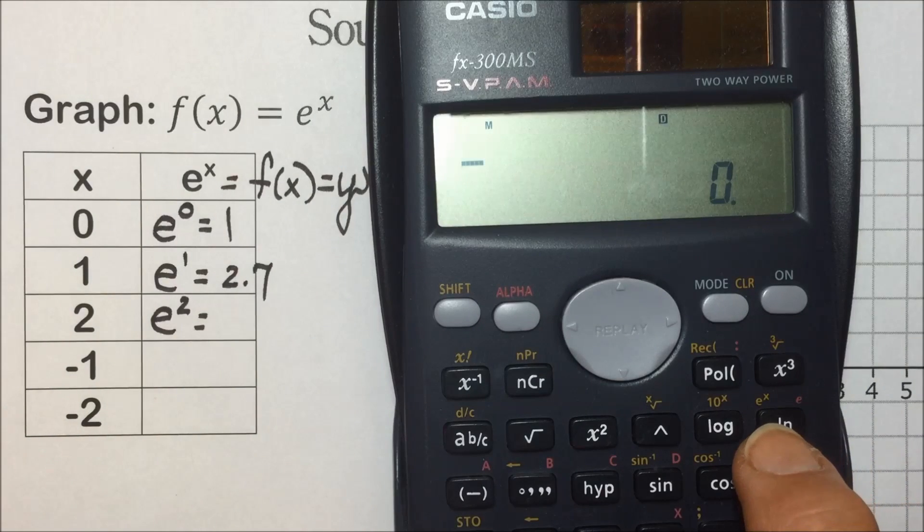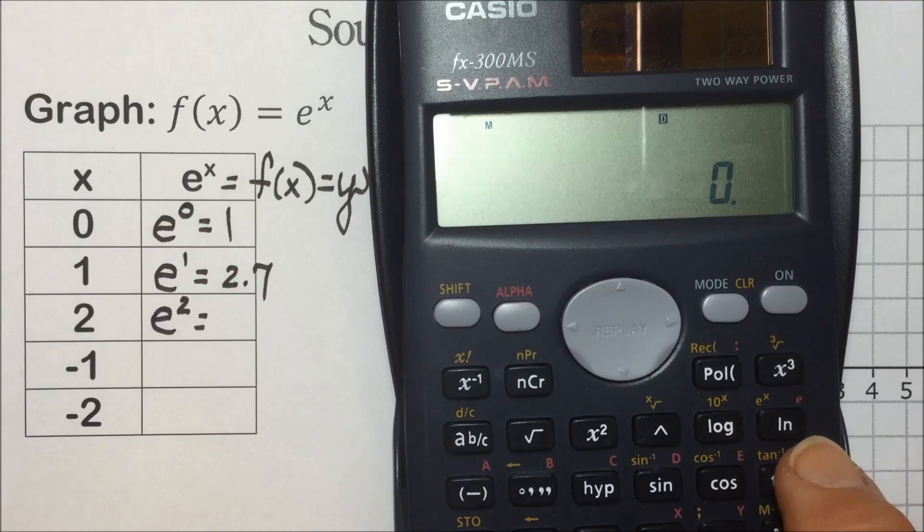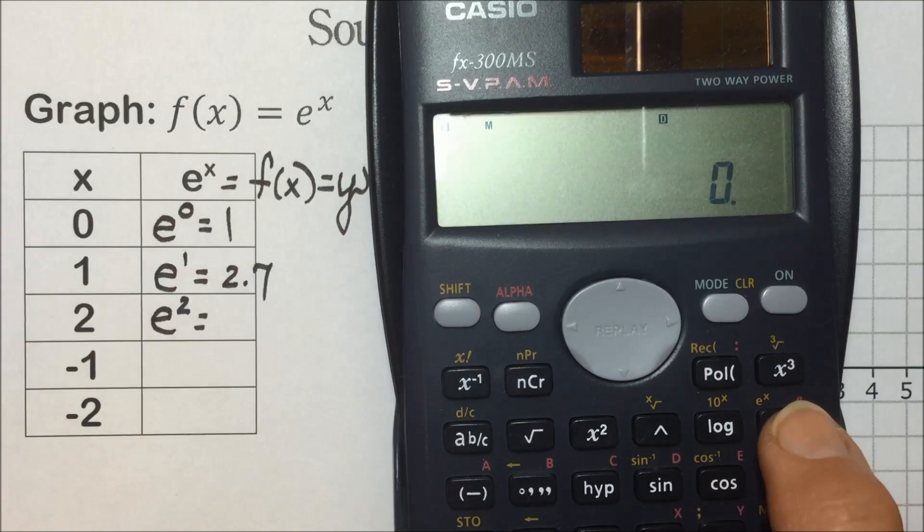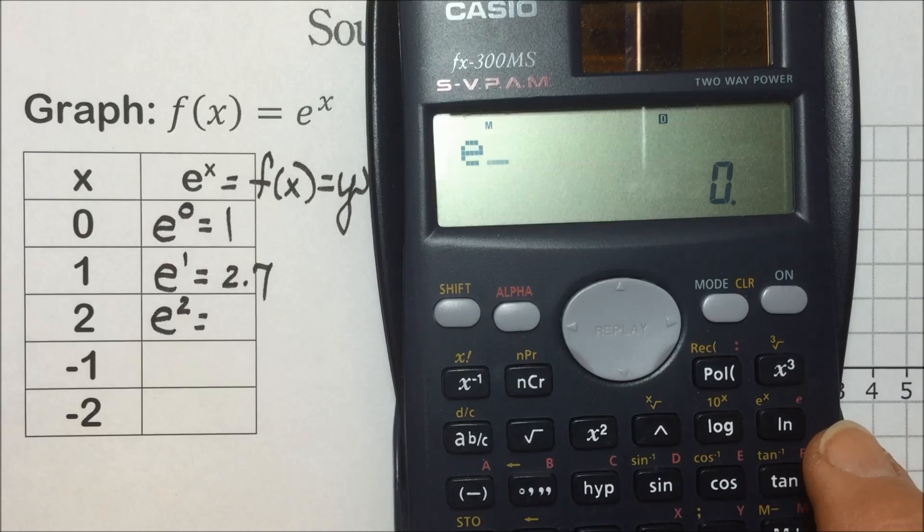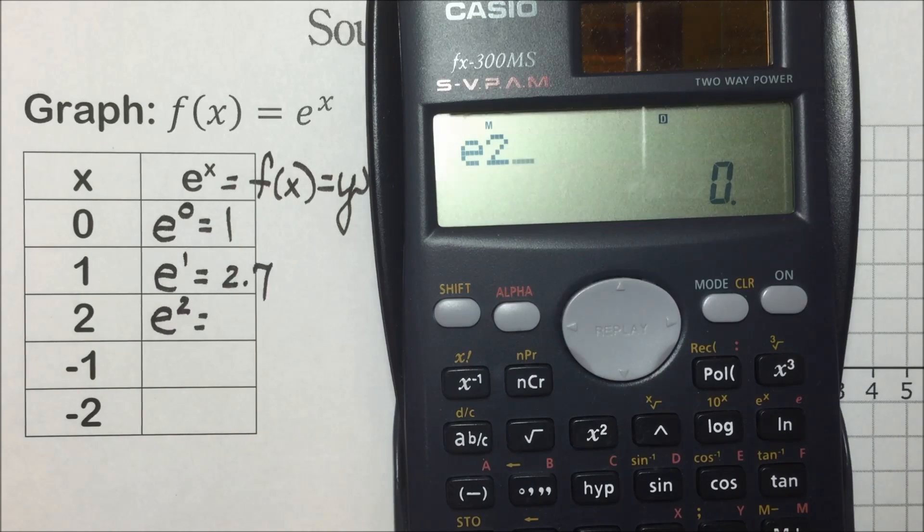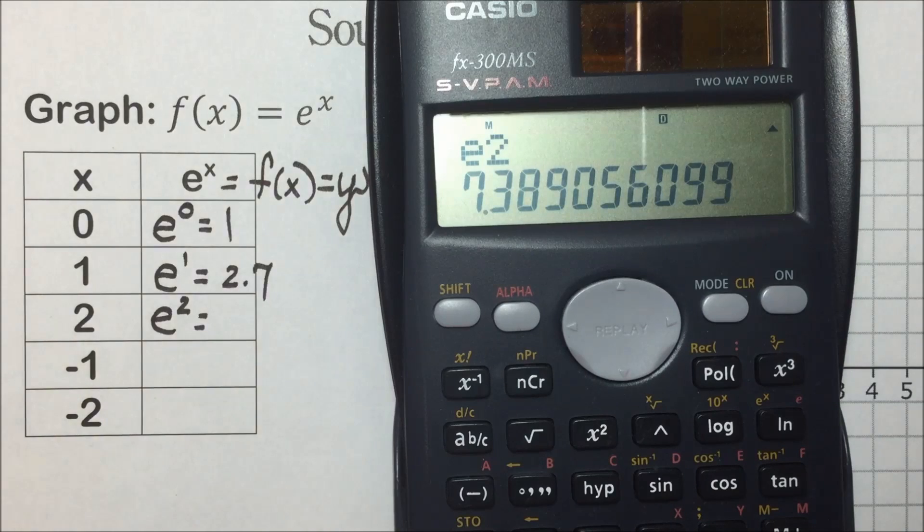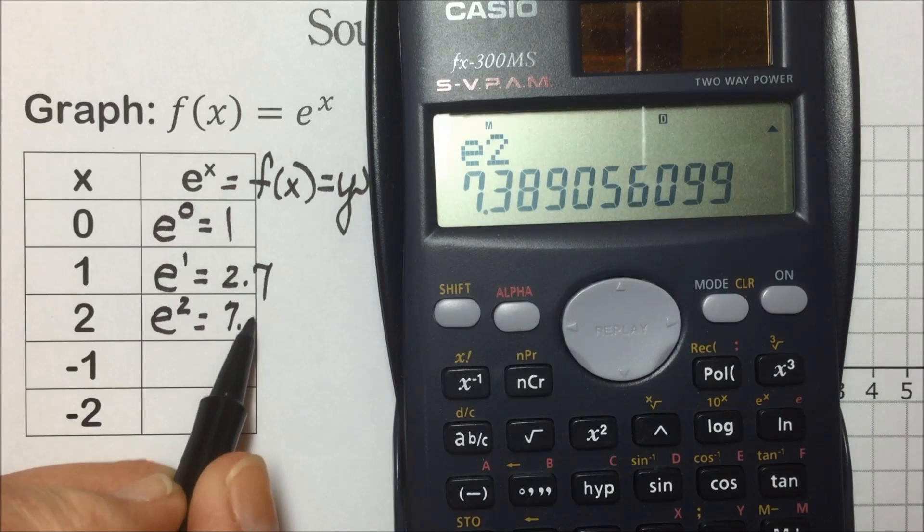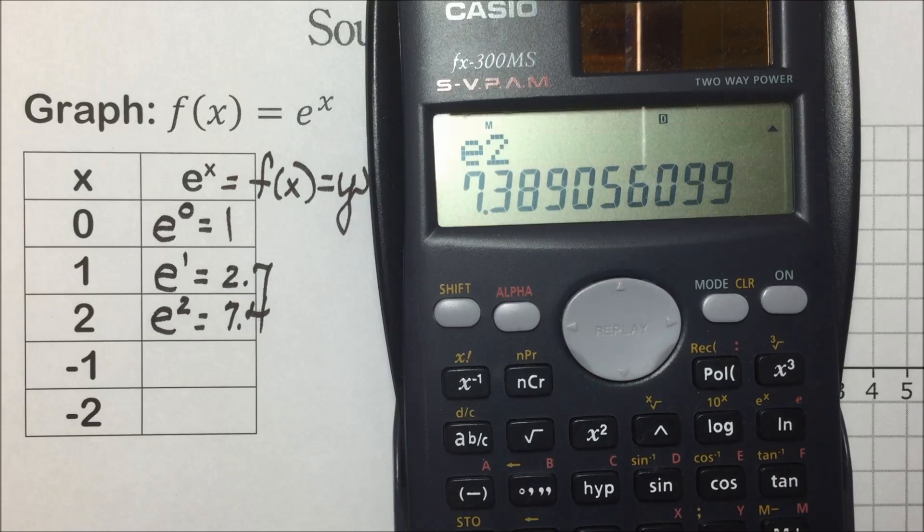We have an e key, which is the exponential inverse of a natural log, which has base e, and to activate that I need to tap the shift and the natural log key, followed by the power. So in this problem I want to know what e to the second power is. I tap equals and I get 7.4 for graphing purposes.